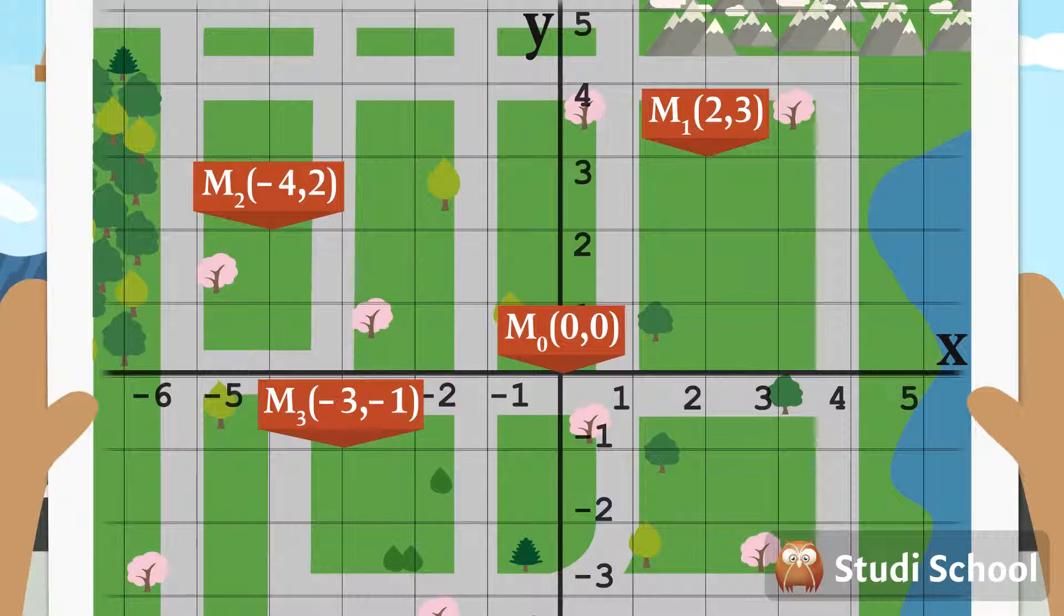The X-coordinate of M3 is -3. A negative X-coordinate means we have to move left on the X-axis. The Y-coordinate of M3 is -1. A negative Y-coordinate means we have to move downwards.